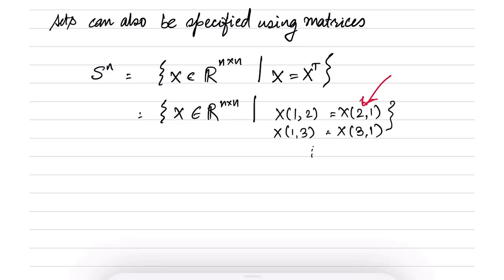In fact, we have already seen this kind of restriction before. This is nothing but a hyperplane. So therefore, the set of symmetric matrices is an intersection of hyperplanes. And we already have a name for this. This intersection of hyperplanes is called polyhedron.